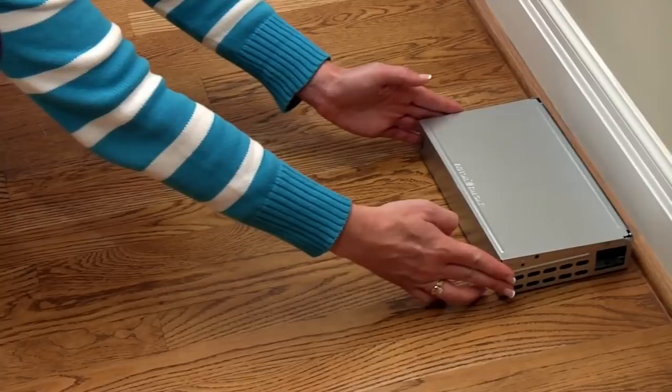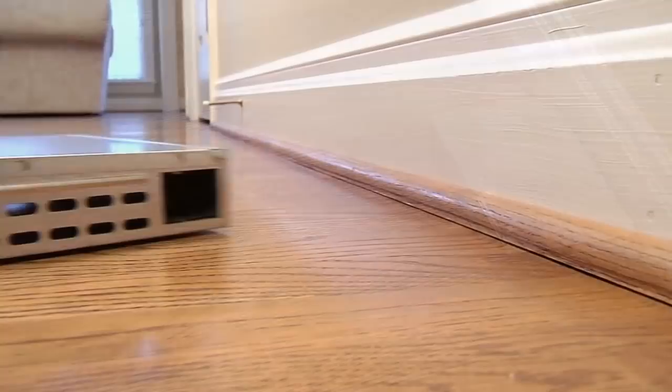Place the trap where you've seen signs of rodent activity or along the wall where rodents primarily travel. The trap should be placed lengthwise against the wall with the entrance hole nearest the wall.